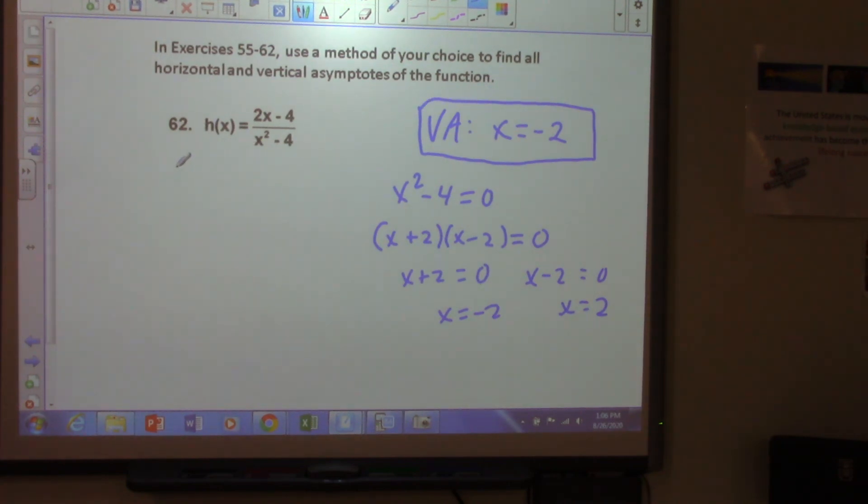Okay, because if we factor this function out here, what do we get? 2 times (x-2), right? And down here, we can rewrite this in factor form as (x+2)(x-2). What happens here? So, we have cancellation, right?